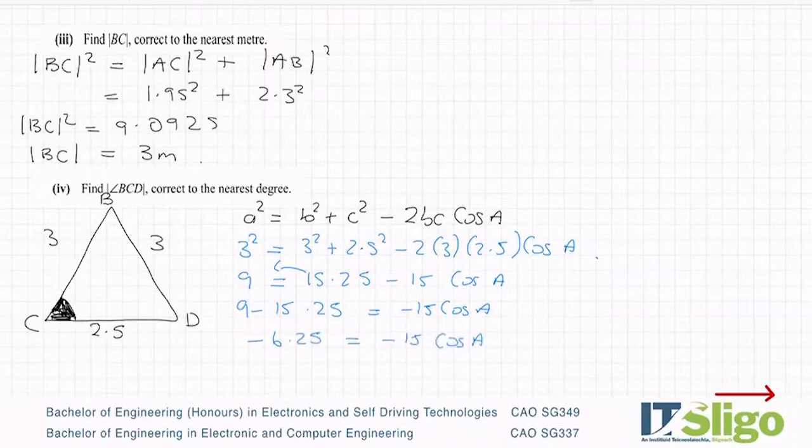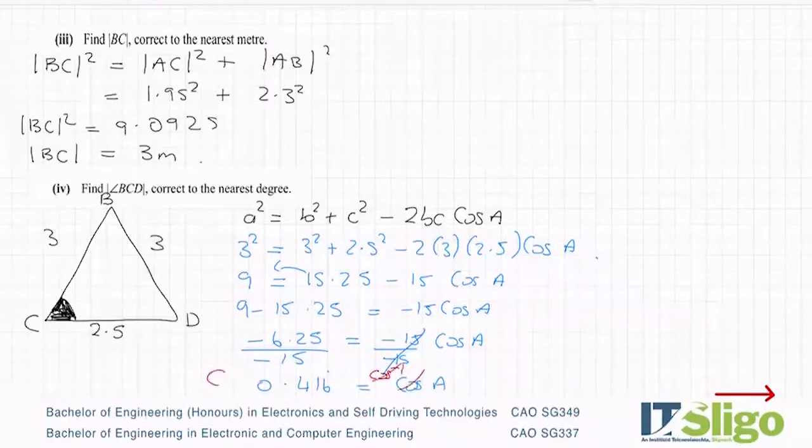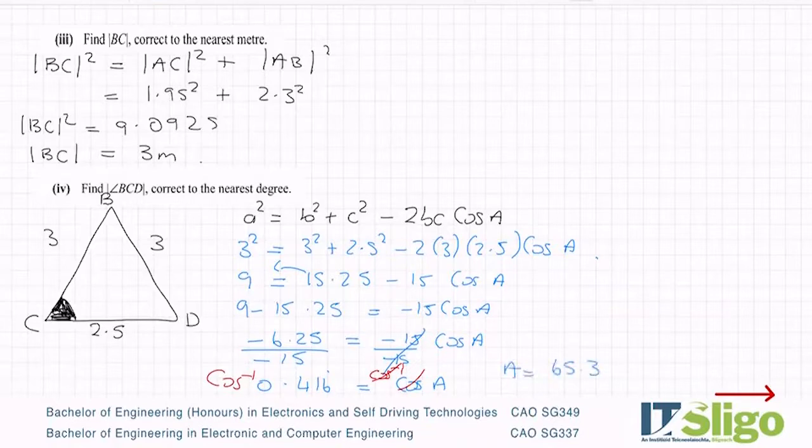So obeying the rules of BOMDAS, which is the order of operations, the order you must do your maths in at all times. Divide across by minus 15 now. And you're getting 0.416 is equal to cos A. So then cos inverse of both sides gets rid of cos. So do cos inverse on your calculator of answer and you get 65.37 degrees. And to the nearest degree then, of course, 65 degrees.